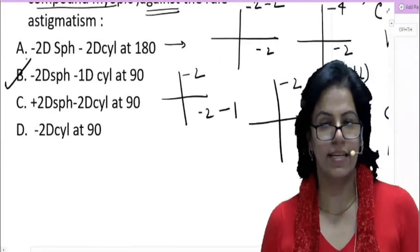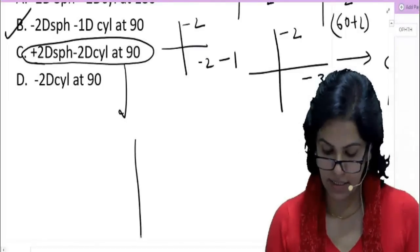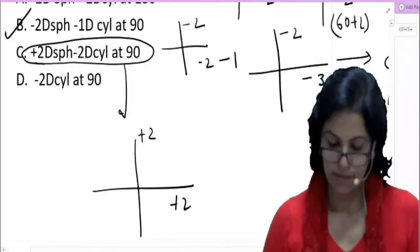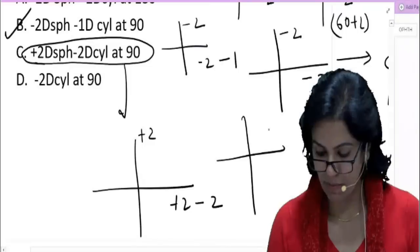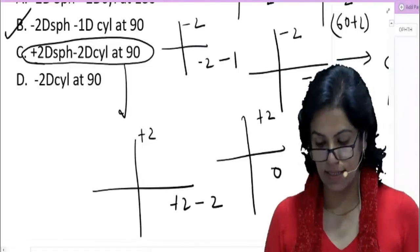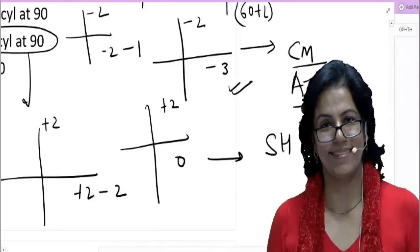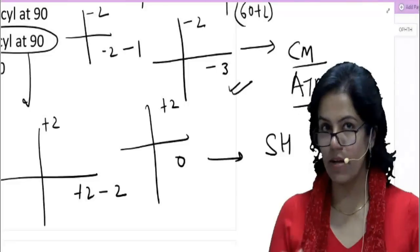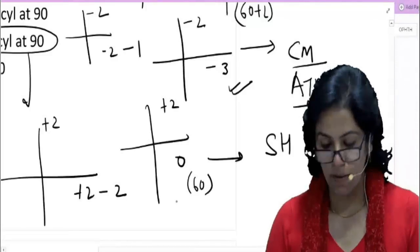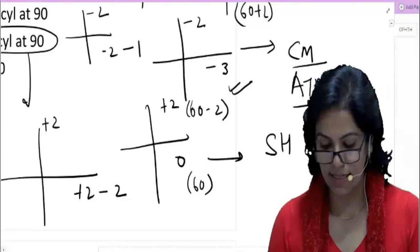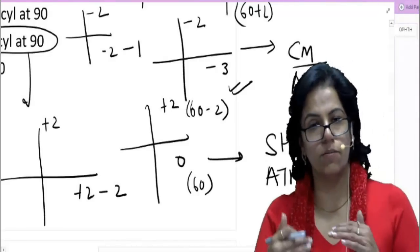Option C: plus two spherical, minus two cylinder at 90. Spherical gives plus two on both axes. Minus two cylinder at 90 means minus two at 90, so that axis becomes plus two minus two equals zero. Retinoscopic reading is plus two and zero. This is simple hypermetropic astigmatism. Zero means 60 diopters; plus two means 60 minus two, so power is more in horizontal. It is against-the-rule, but it is not compound myopic — so not the answer.